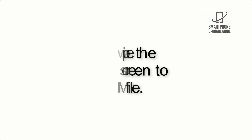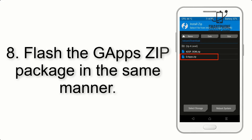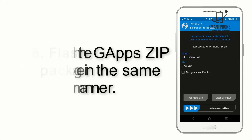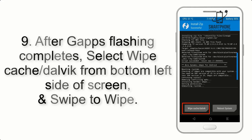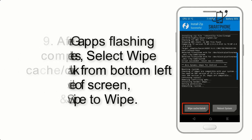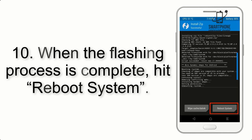Step 8: Flash the GApps zip package in the same manner. Step 9: After GApps flashing completes, select Wipe Cache and Dalvik from the bottom left side of the screen and swipe to wipe. Step 10: When the flashing process is complete, proceed to reboot.